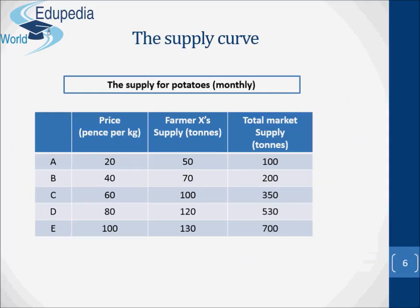Now let's talk about the supply curve, but before that we should talk about the supply schedule. The amount that producers would like to supply at various prices can be shown in a supply schedule. A supply schedule is a table showing the different quantities of a good that producers are willing and able to supply at various prices over a given time period. A supply schedule can be for an individual producer, a group of producers, or for all producers. This table shows a monthly supply schedule for potatoes, both for an individual farmer, Farmer X, and for all farmers together — the whole market.